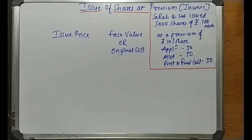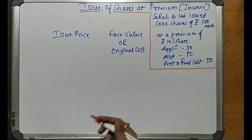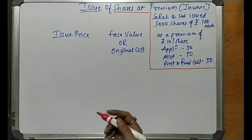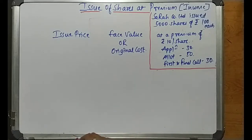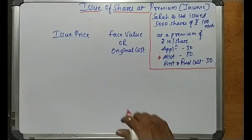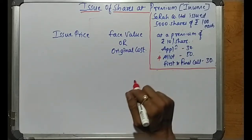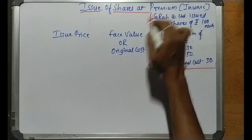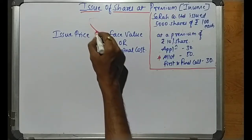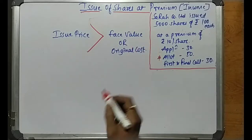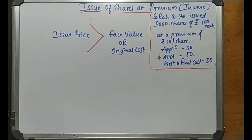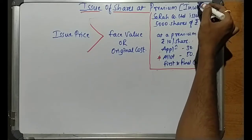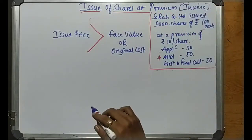Hello everyone, welcome back. This is Anand again. In the last lecture we tried to understand the concept of issue of shares at discount, which is a loss for the company, and such loss is adjusted at the allotment stage if nothing is mentioned in the problem. Moving ahead, in today's lecture we'll try to understand the concept of issue of shares at premium, where the company will quote an issue price higher than the face value, earning extra income.